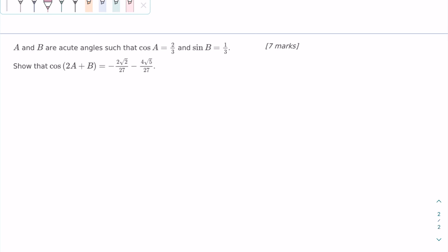In this video, I will show you how to solve this IB HL math question. A and B are acute angles such that cosine A is 2/3 and sine B is 1/3. Show that cosine of 2A plus B is equal to this equation.